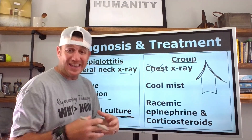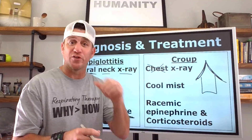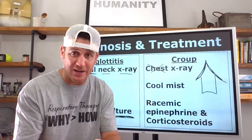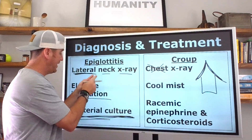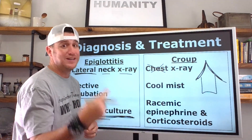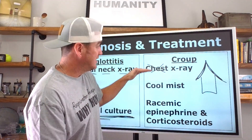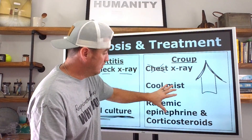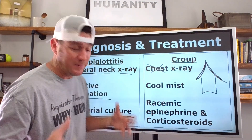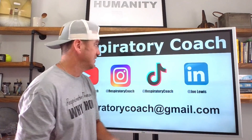So those are the key findings: epiglottitis — remember the four D's (drooling, dysphagia, dysphonia, distress), look for the thumb sign on lateral neck x-ray, and electively intubate to secure the airway. Croup — barking cough, stridor, steeple sign on AP neck x-ray, and reduce inflammation with cool mist, racemic epinephrine, and corticosteroids. That is the difference between epiglottitis and croup in a surface-level presentation.